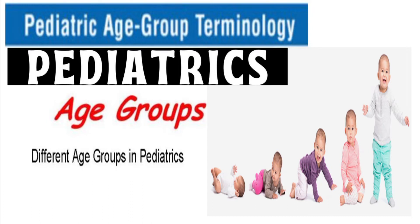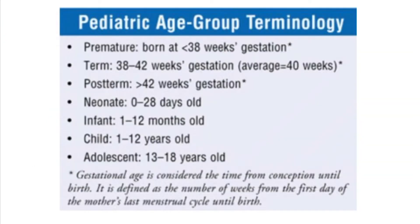Pediatric age group terminology refers to the meaning and classification of different age groups in pediatrics. The first term is premature — a premature baby means a baby born at less than 38 weeks of gestation.